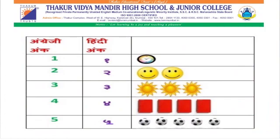In English there is 1, in Hindi it is १ (ek). Our English 1 is Hindi १. In English there is 2, in Hindi it is २ (do).